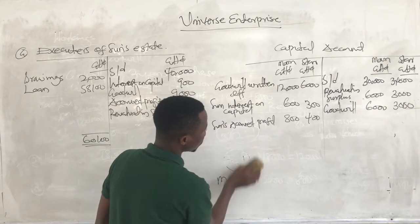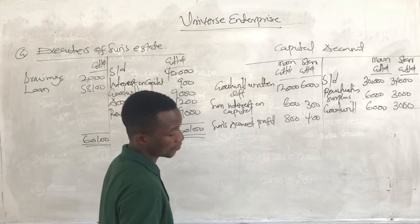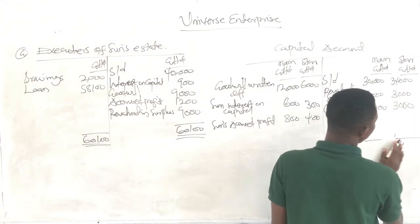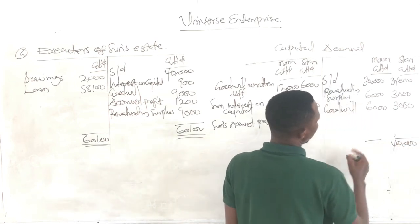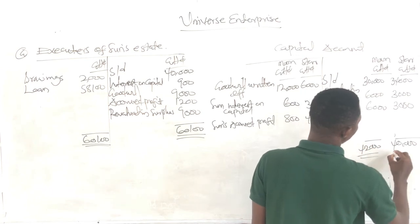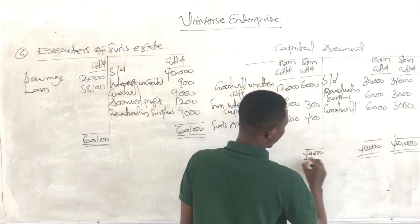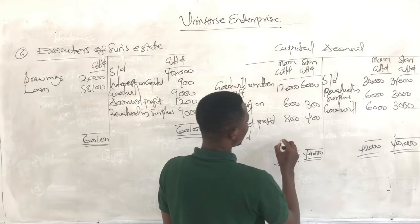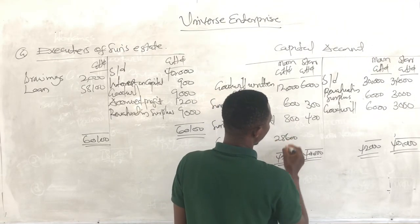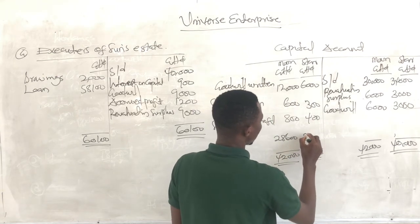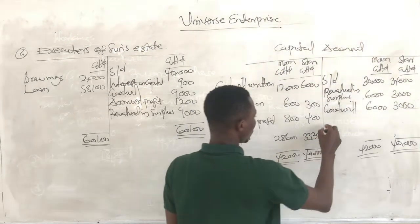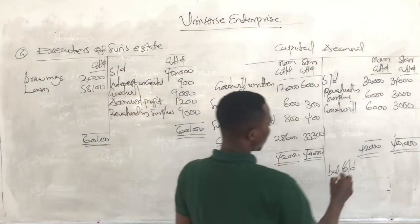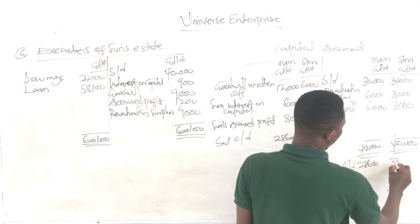So we are done with the entries. Closing Moon's capital account: credits sum to $42,000 and debits sum to $13,400, giving a balance carried down of $28,600. For Star: credits total $40,000 and debits total $6,700, giving a balance carried down of $33,300. These balances brought down — $28,600 for Moon and $33,300 for Star — will be presented as the partners' capital account balances in the final statement of financial position.